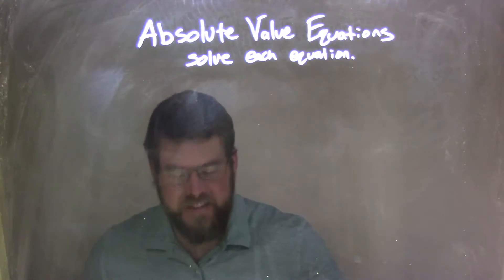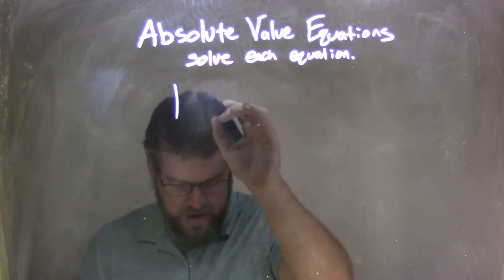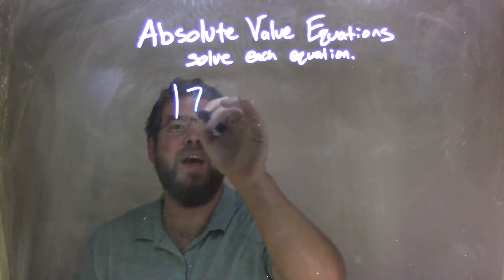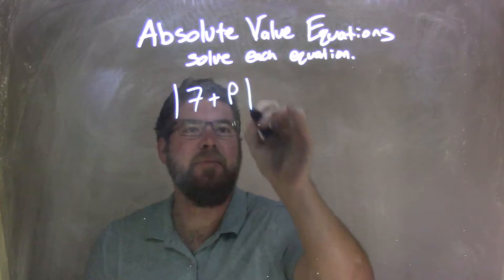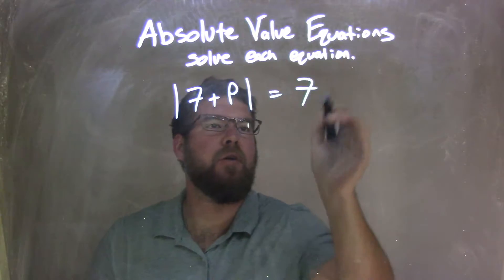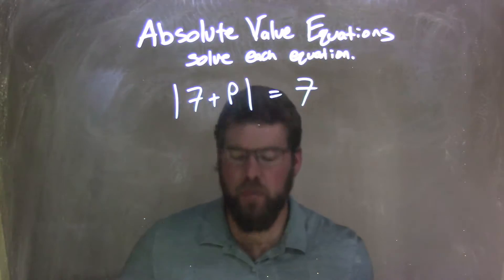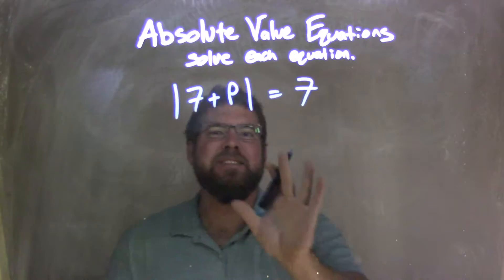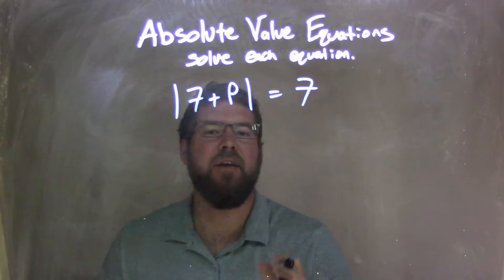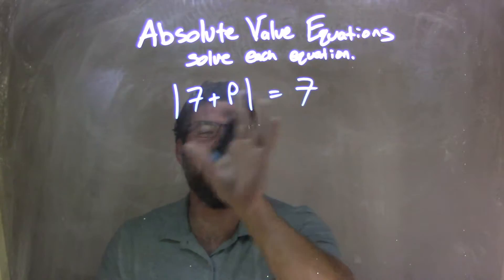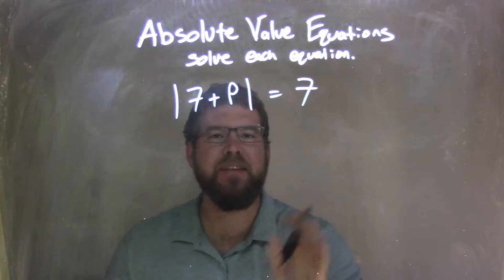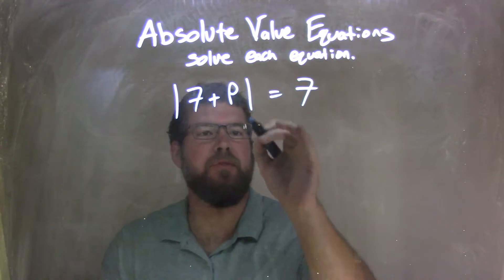So, if I was given this equation — absolute value of 7 plus P equals 7 — the first thing is I have to look and see: is the absolute value isolated? And it is. It's by itself on one side of the equation. So now I can split this into two problems.